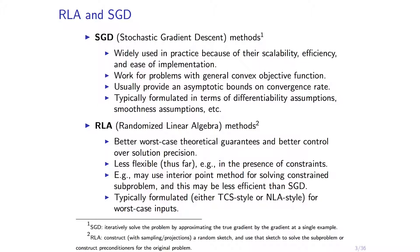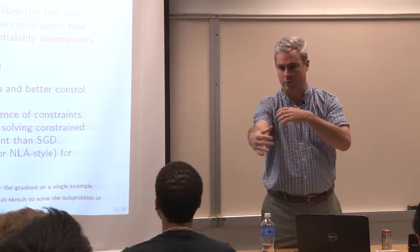Randomized linear algebra: construct, with either sampling or projections, a random sketch and use that sketch to either solve the sub-problem or construct a preconditioner for the original problem. Either stop with a good low-precision sketch or iterate to get a high-precision sketch. It gives the best worst-case theoretical guarantees for certain problems and better control over solutions. It's less flexible — it's linear algebra, not general convex optimization. Typically formulated in TCS-style worst-case analysis or numerical linear algebra style, about the data in front of me, not data I might see tomorrow.